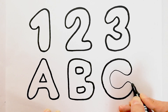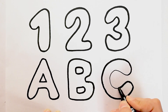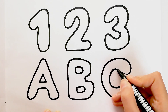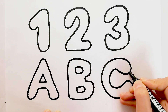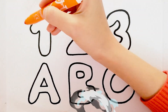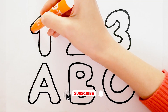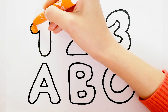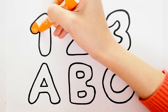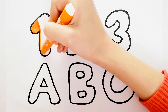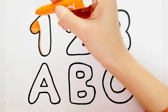A, B, C, D, E, F, G, H, I, J, K, L, M, N, O, P, Q, R, S, T, U, V, W, X, Y, and Z. Now I know my ABCs, next time won't you sing with me?